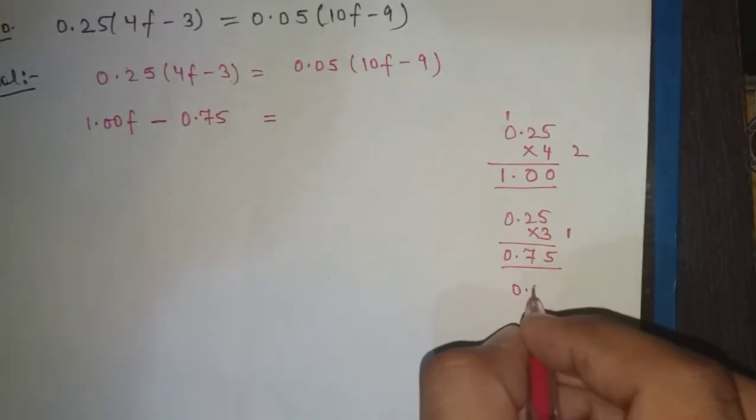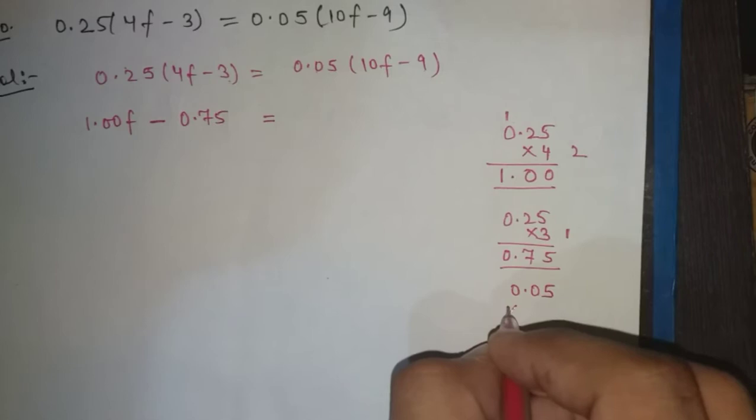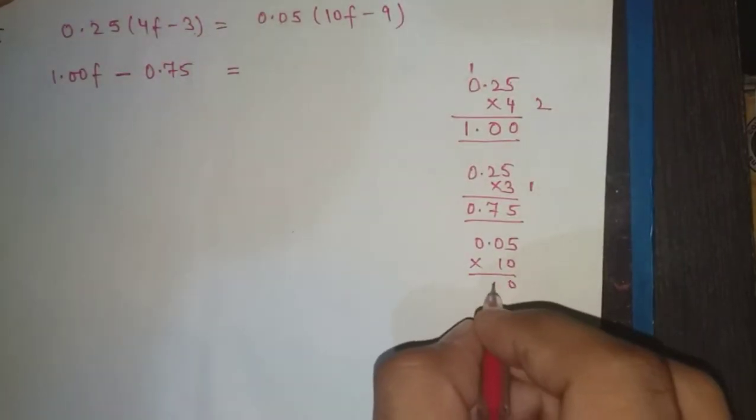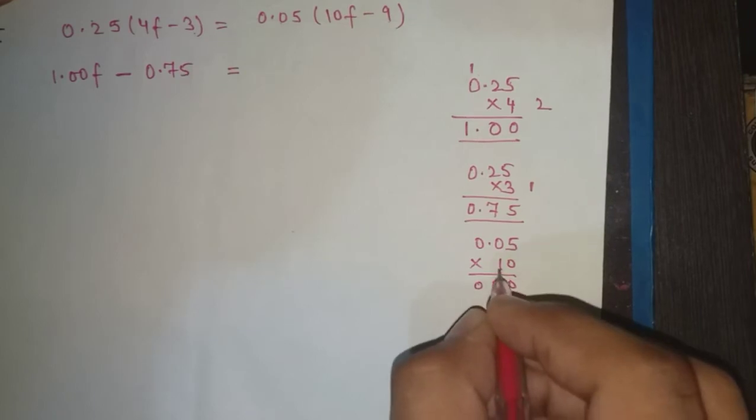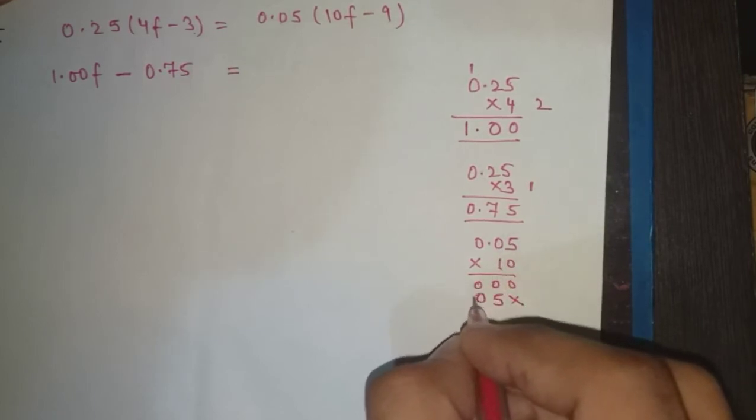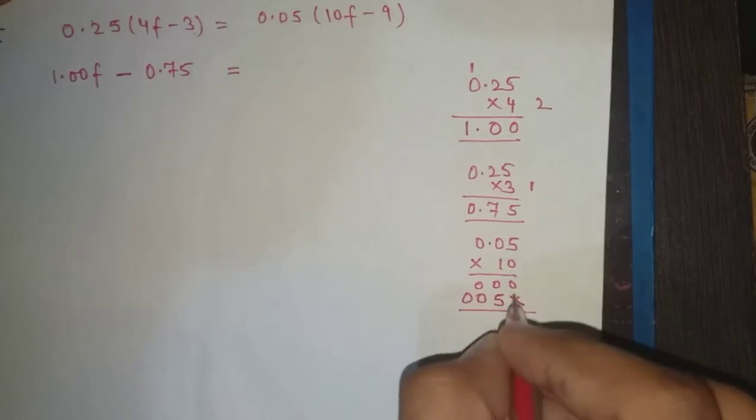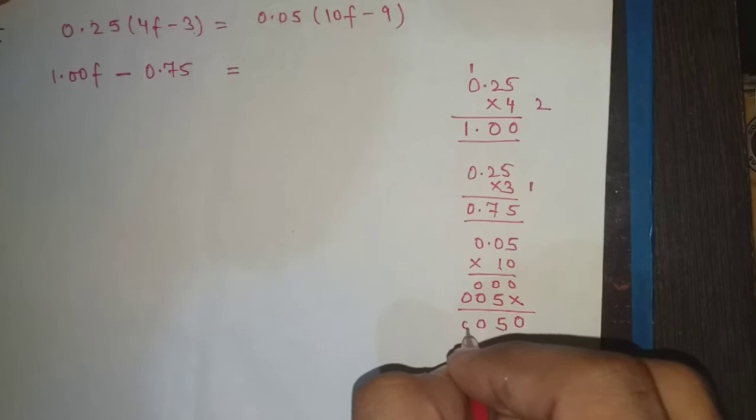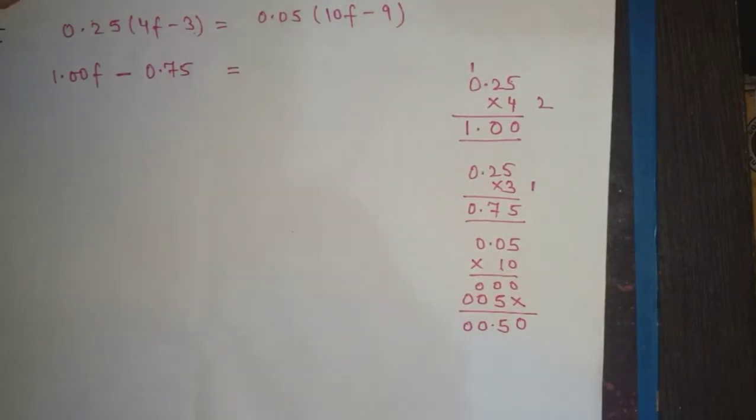This equals 0.05 times 10. 0.05 into 10: 5 times 0 is 0, 0 into 1 is 0, so it's 0.50, that means 0.5f. Then 0.05 times 9 equals 0.45.